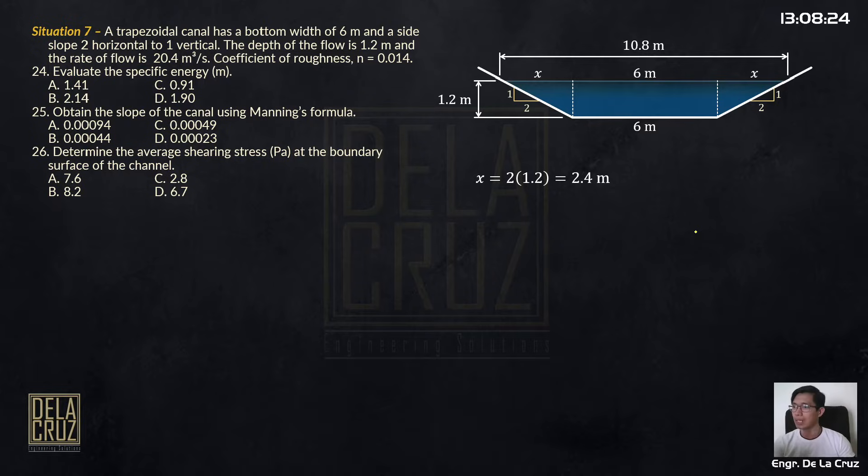I'll get here first our y. I call it y because we need it for the wetted perimeter later. So if we have x and we have here 1.2, we can solve that by Pythagorean theorem.